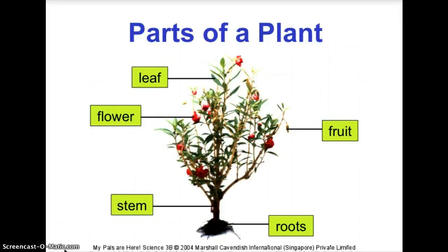The parts of a plant are: roots, stem, fruit, flower, and leaf. Make sure to spell all these words correctly. Note that in our first science topic we learned about flowering and non-flowering plants — non-flowering plants do not have flowers or fruits, so please keep that in mind.